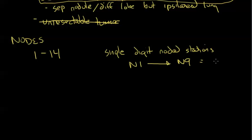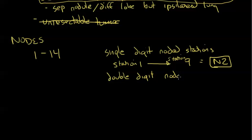So station 1 all the way up to station 9 is going to be an N2 node. Double digit nodal stations are going to equal N1. So these equal N2. These equal N1. So station 10 all the way up to station 14 which is intraparenchymal is going to be an N1 node.